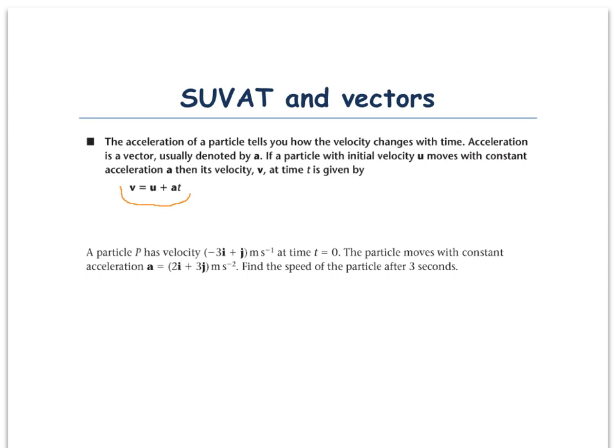A particle P has velocity minus 3i plus j meters per second at time equals 0. The particle moves with constant acceleration a equals 2i plus 3j meters per second squared. Find the speed of the particle after 3 seconds.